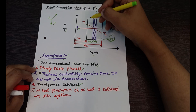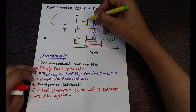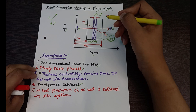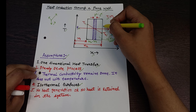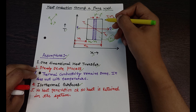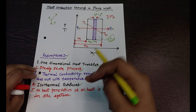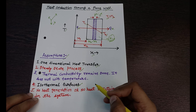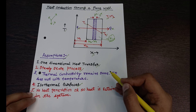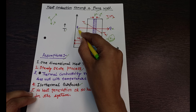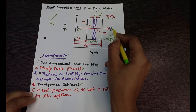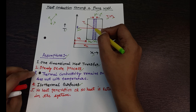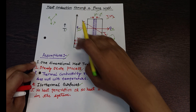The fourth assumption is isothermal surfaces, meaning the temperature of the left surface remains T1 and the temperature of the right surface remains T2 throughout. We cannot assume variations like T2, T2-dash, T2-3 across the surface — these assumptions are prerequisite to derive the equation. The fifth assumption is no heat generation and no heat retention within the system. This means if heat entering is qx, then heat leaving is also qx — nothing is generated or retained internally.